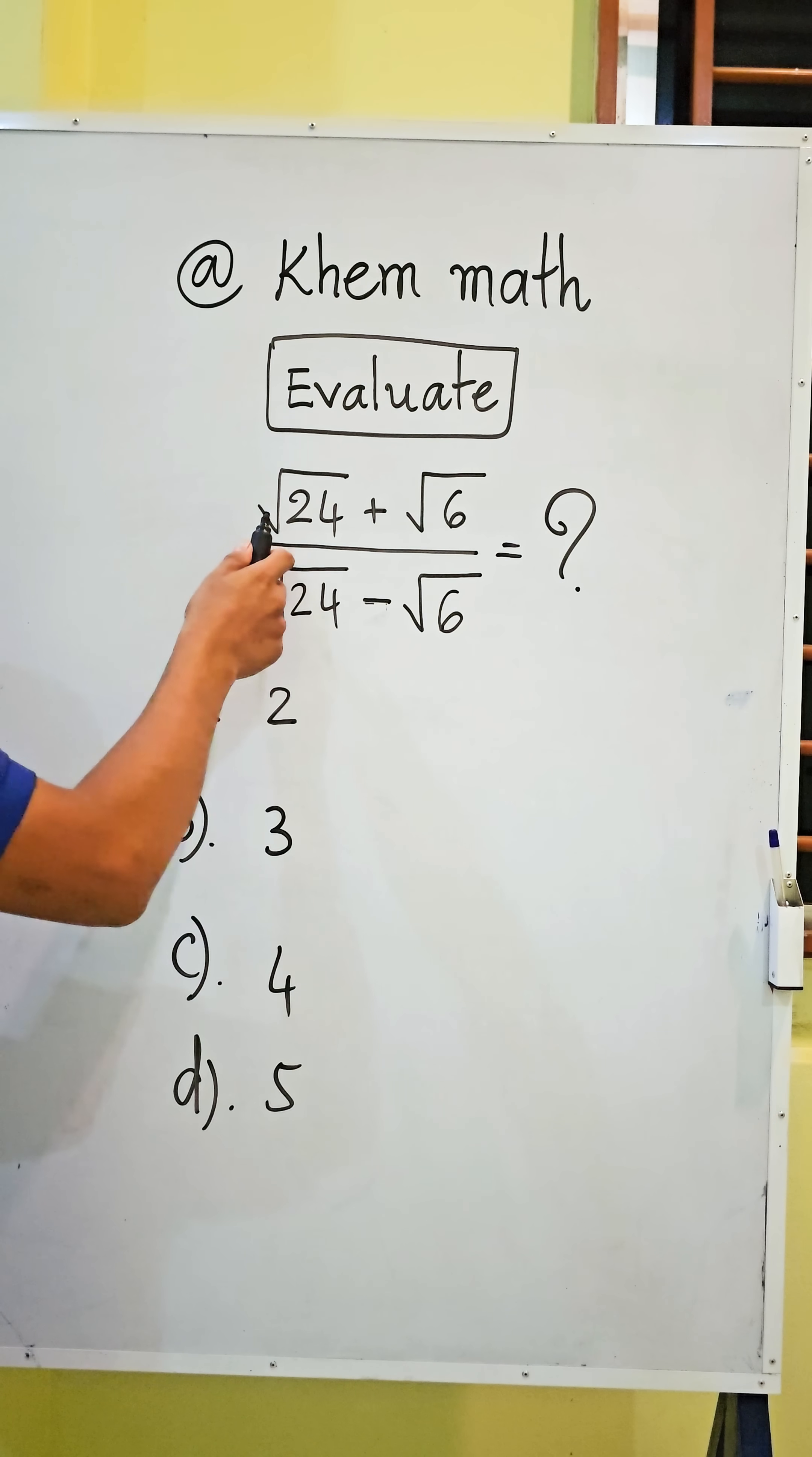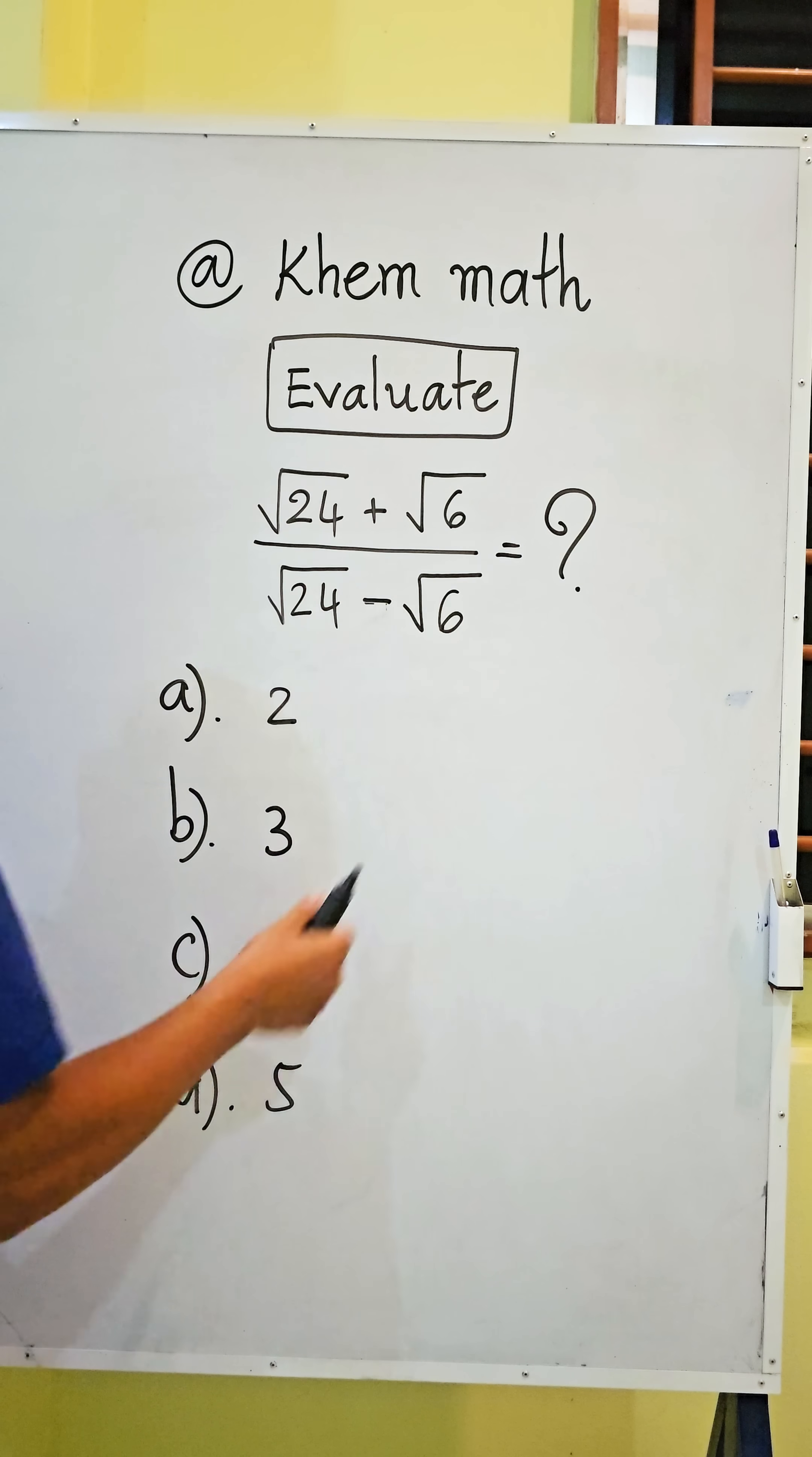Evaluate square root 24 plus square root 6, divided by square root 24 minus square root 6. The answer options are a) 2, b) 3, c) 4, and d) 5. Which one is our answer?